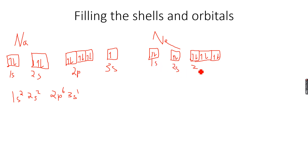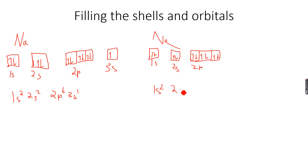I'm giving you time to think about the electronic configuration of neon and how we write it. Take a pause, write it out, then continue. So for neon we write: 1s² 2s² 2p⁶. This is the electronic configuration of neon.